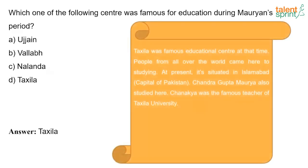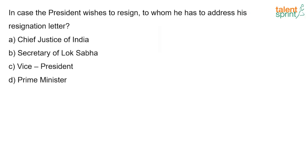Takshila was famous as an educational center at that time and people from all over the world came here to study. At present it is situated in Islamabad, the capital of Pakistan. Chandragupta Maurya also studied there. Chanakya was the famous teacher of Takshila university.